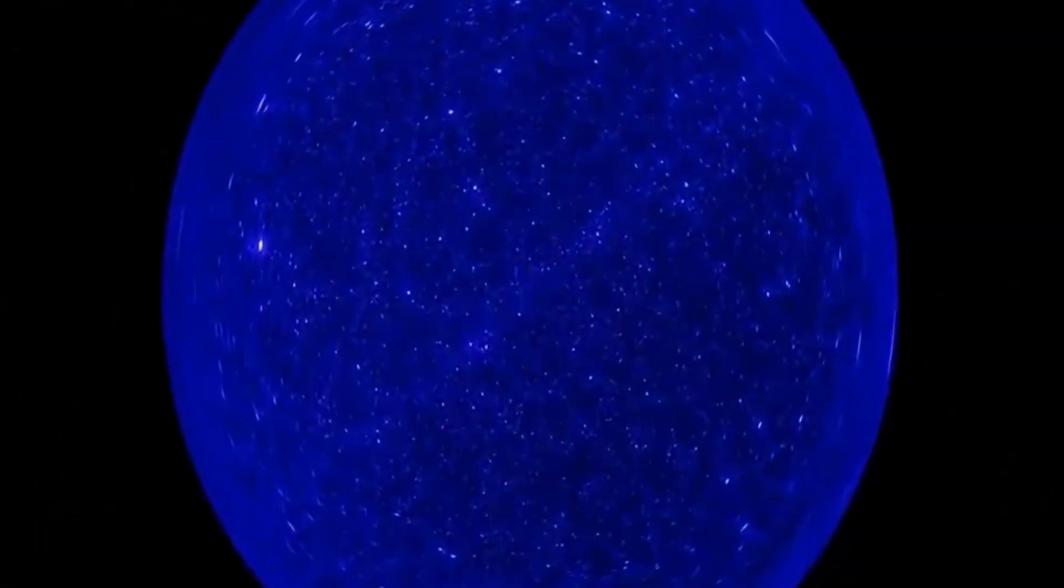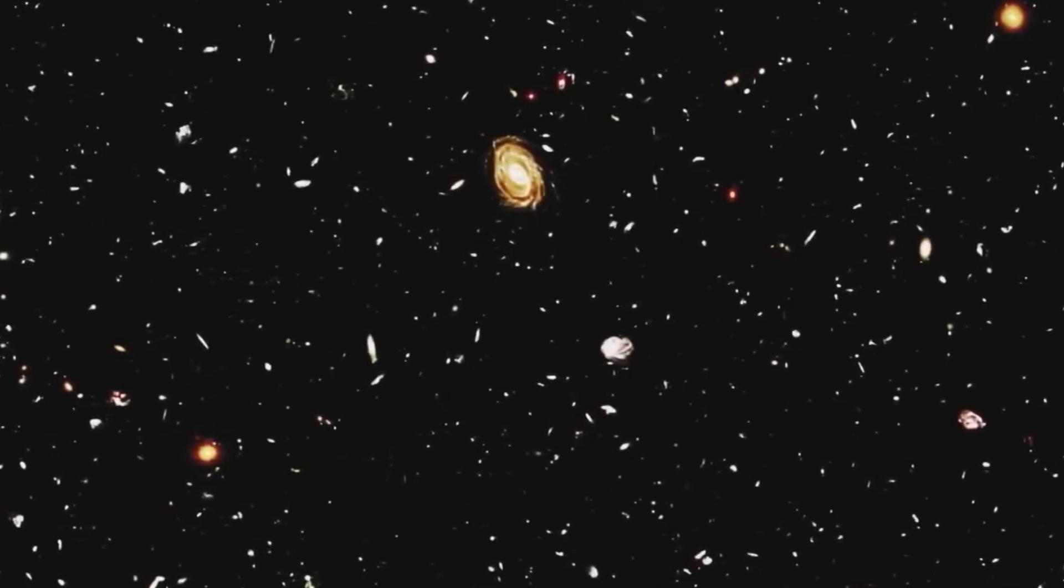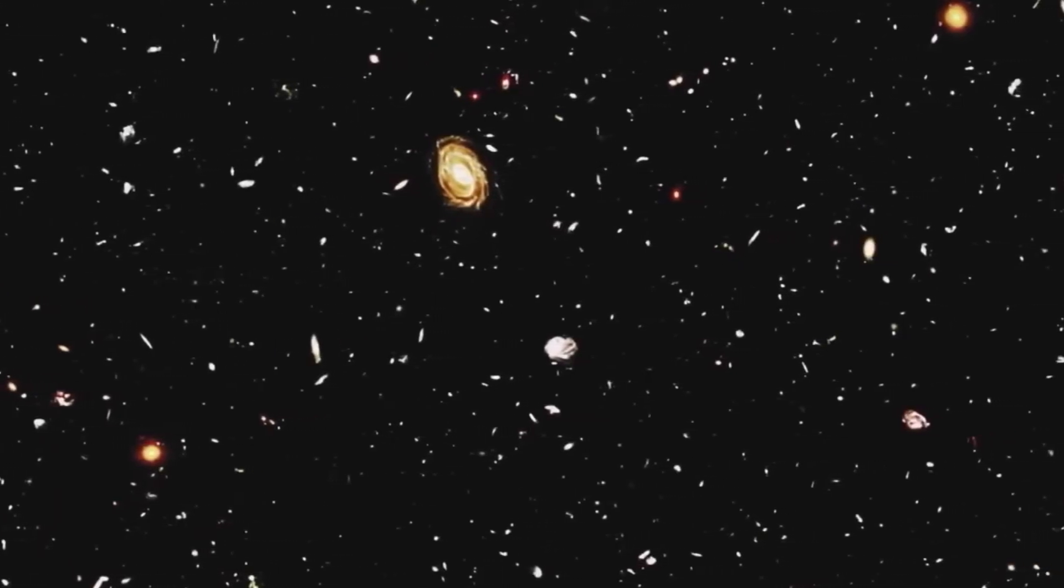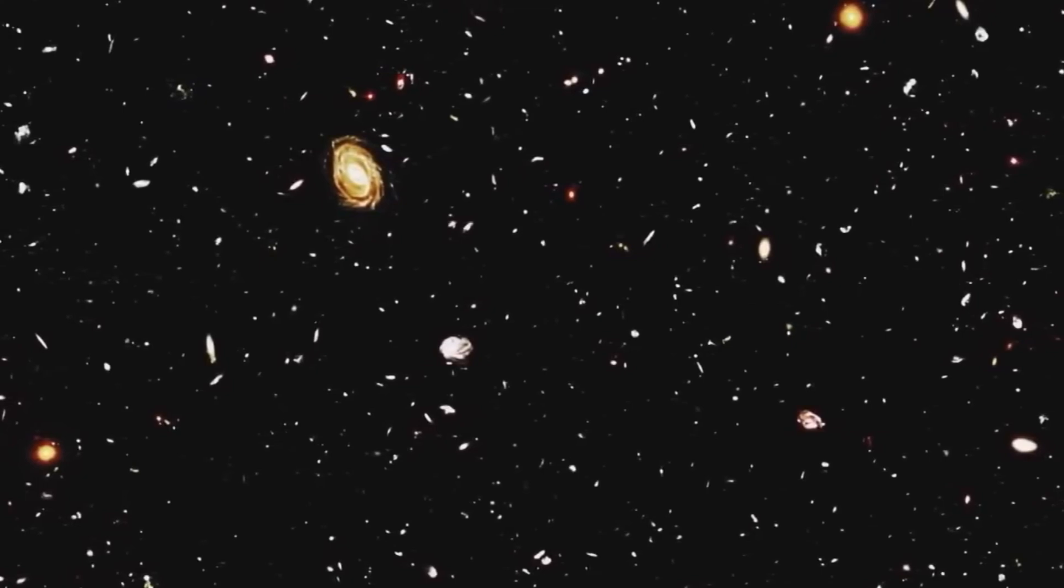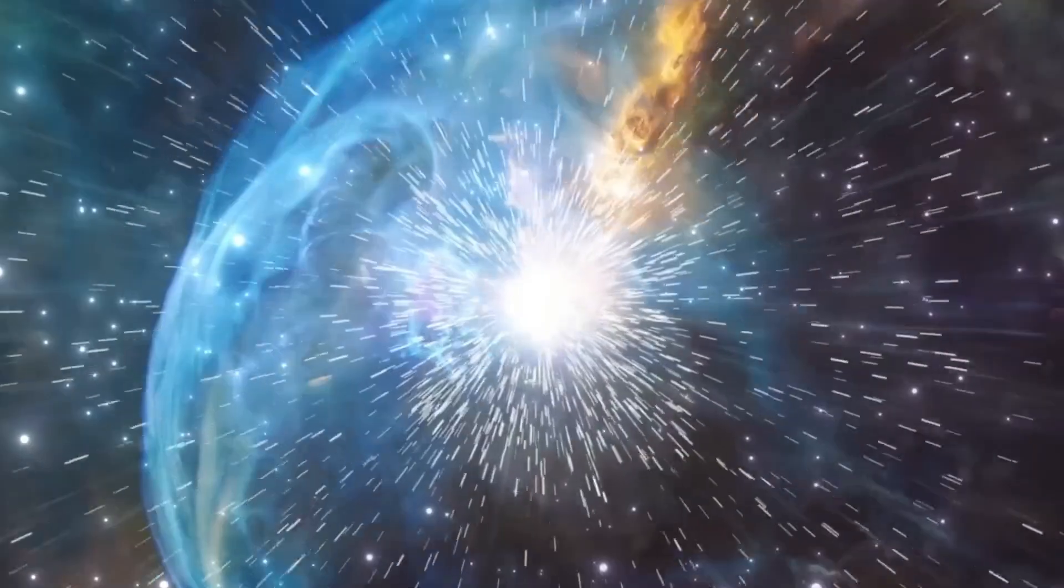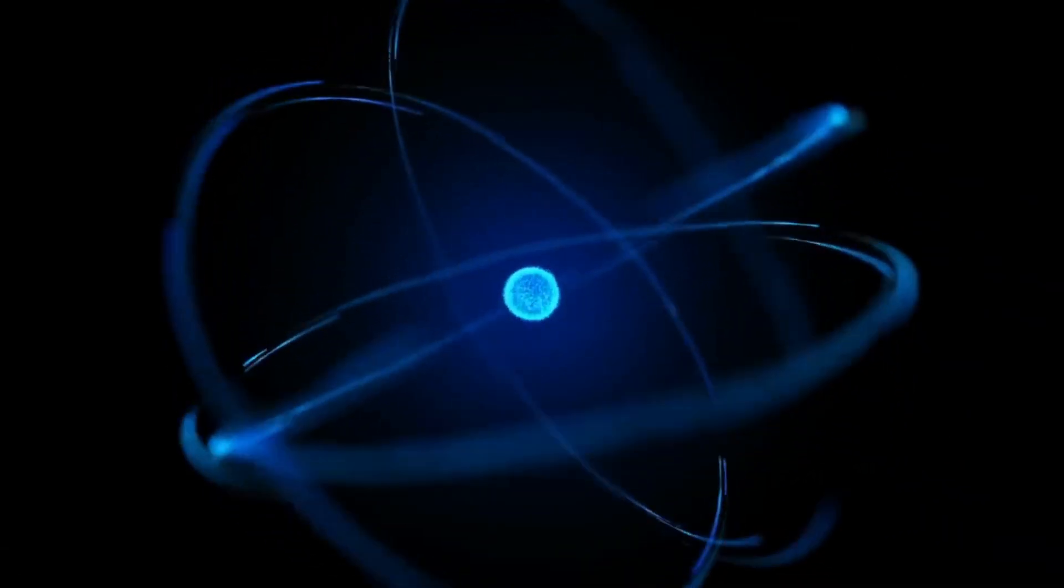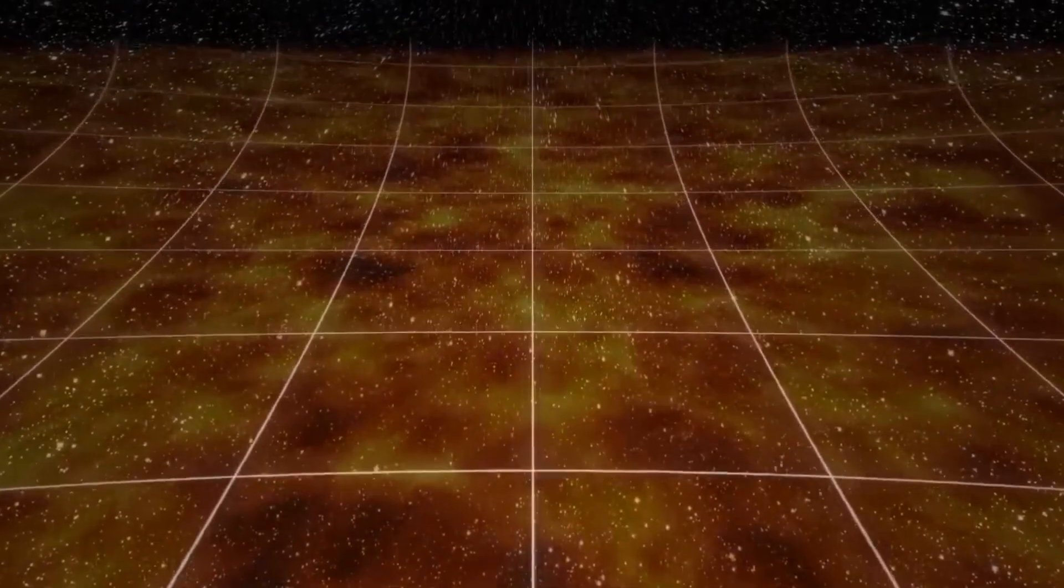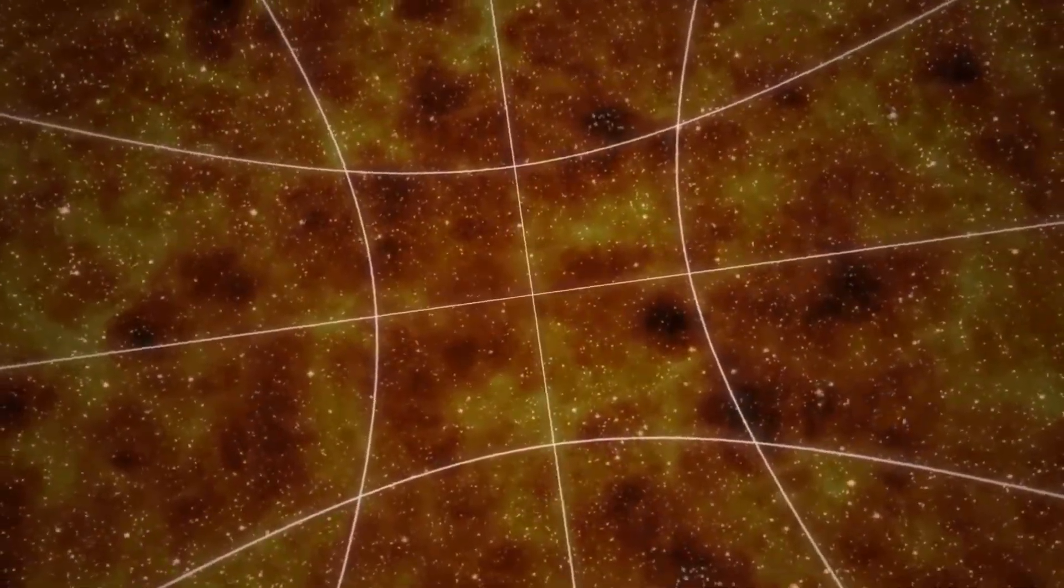Then you ask the question, why is our universe so perfect for life? Why do stars make carbon and oxygen, the elements that you need for life? Why is everything so beautifully balanced so that living things can exist? The answer in these cases is because every universe exists. Every possible combination of the laws of nature exists in different universes.